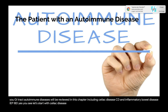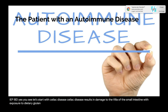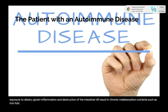Celiac disease results in damage to the villi of the small intestine upon exposure to dietary gluten. Inflammation and destruction of the intestinal villi result in chronic malabsorption of nutrients such as iron, folic acid, fat-soluble vitamins, and vitamin B12.